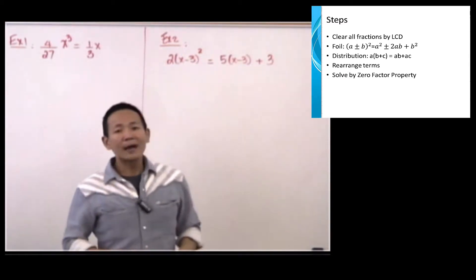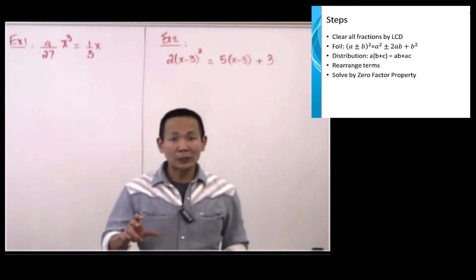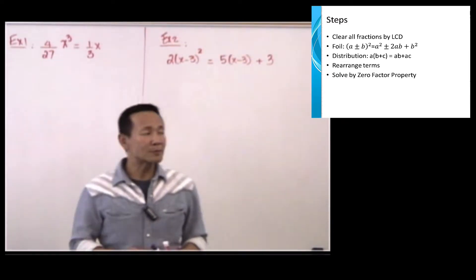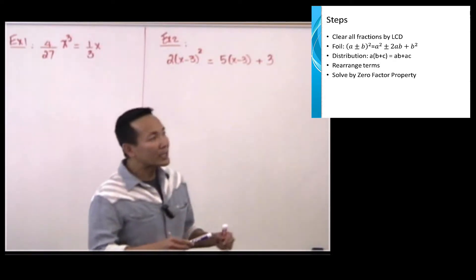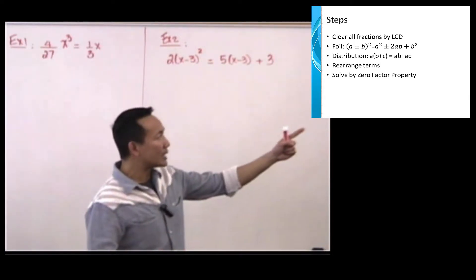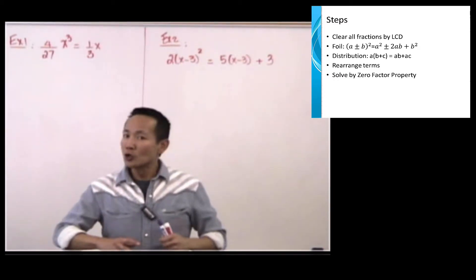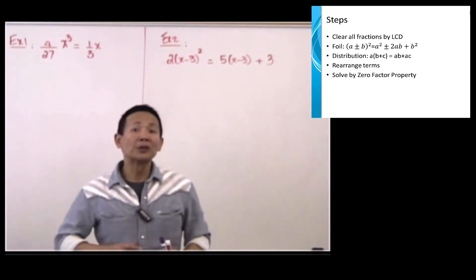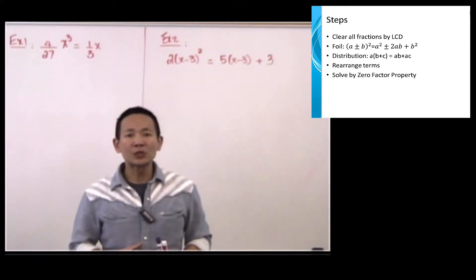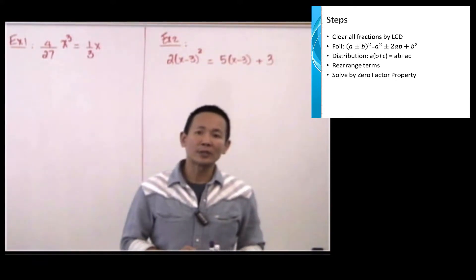After you perform FOIL, you have to check for the distributive property, which is A times the quantity of B plus C. Worked out, we have A times B plus A times C. After you perform distribution, we have to combine like terms on each side of the equation.